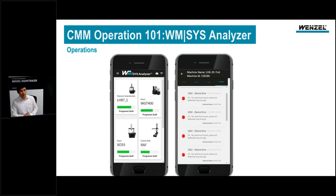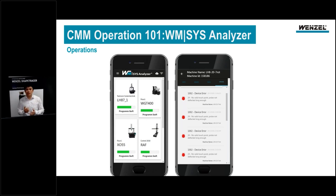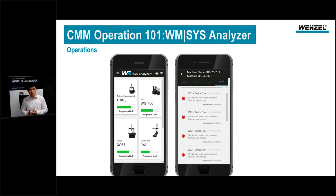The operations module can also display software and hardware errors in detail. If something is wrong with the machine or your process, you can retrace the problem very quickly. For example, if there was a collision during the night shift, you can detect it with this analyzer.